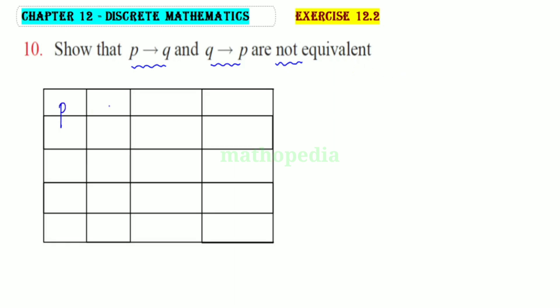The columns are: statement p, q, if p then q, and if q then p.